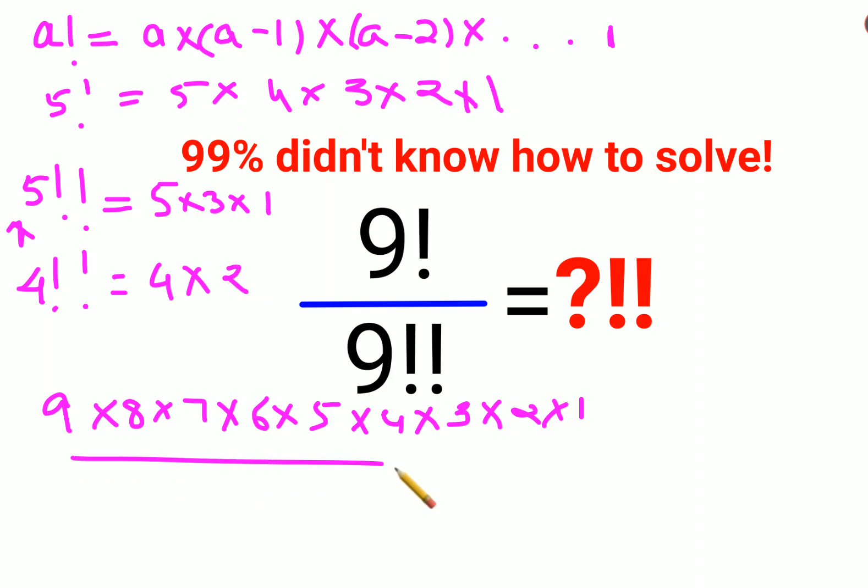Now here we are dividing it by 9 double factorial. So 9 is an odd number, so we will only consider just odd numbers starting from 9 going up to 1. So we will do 9 into 7 into 5 into 3 into 1.